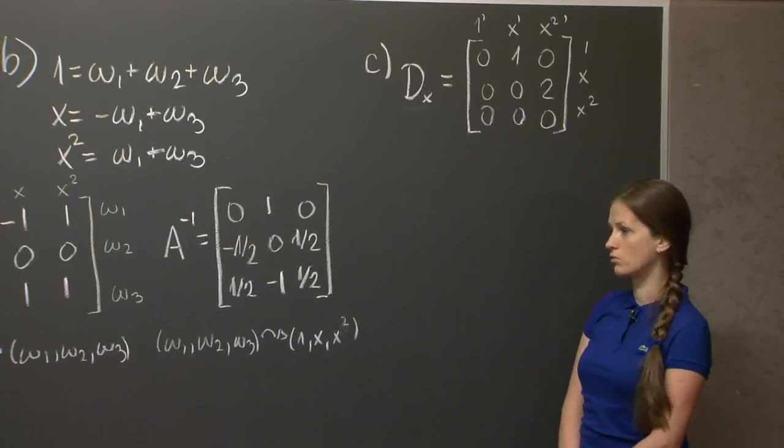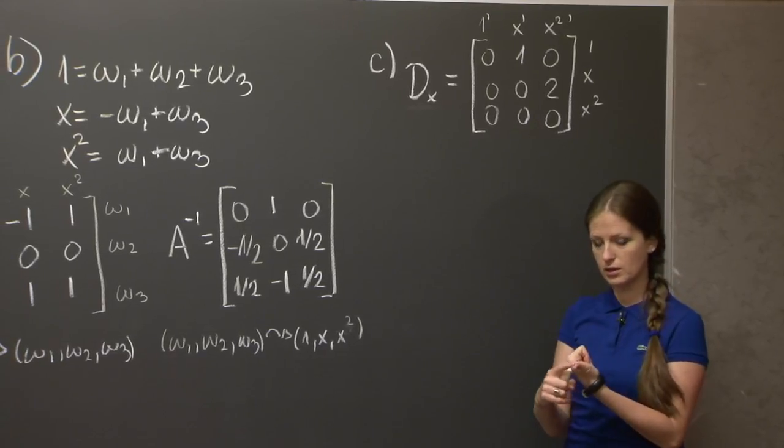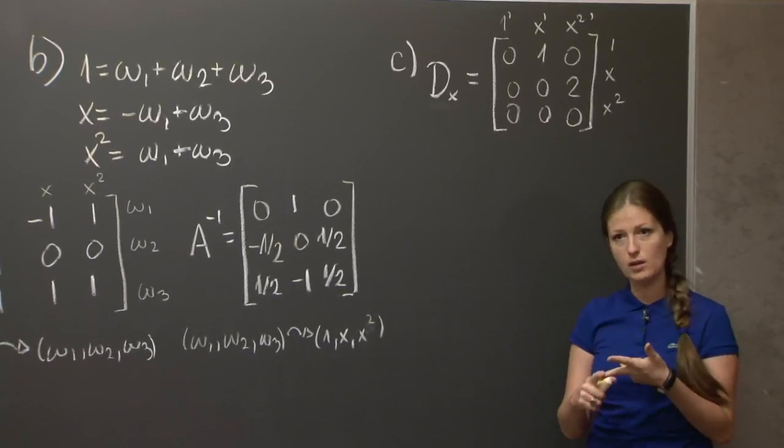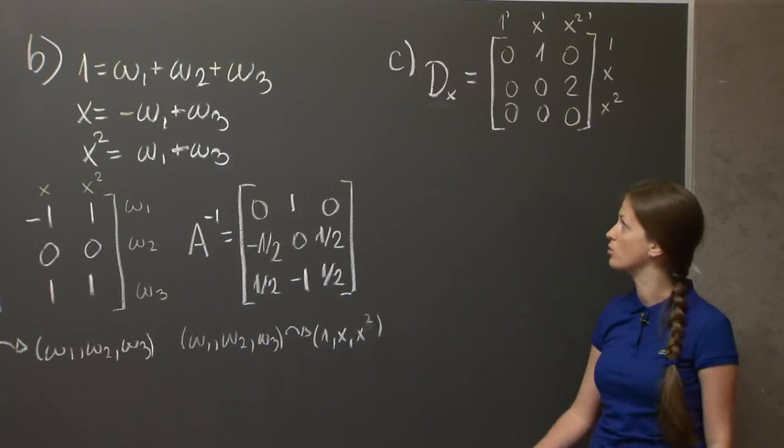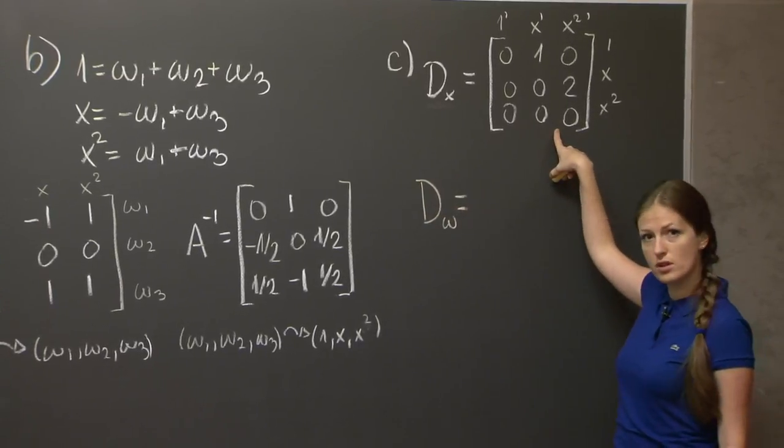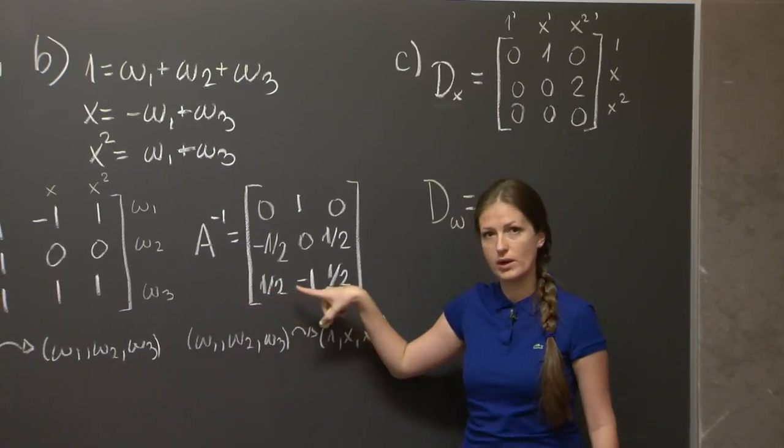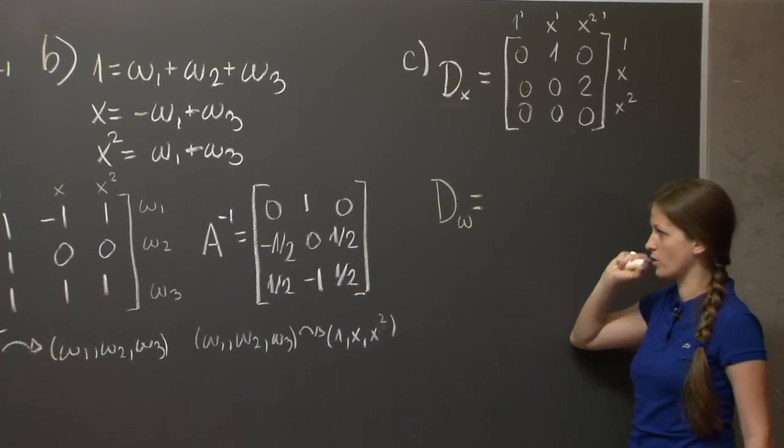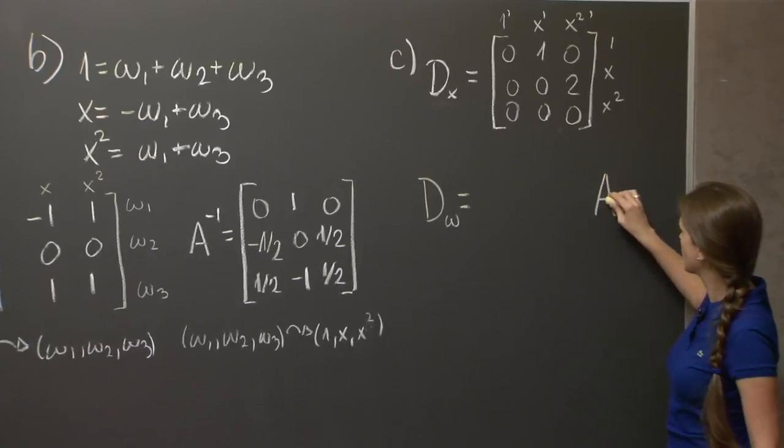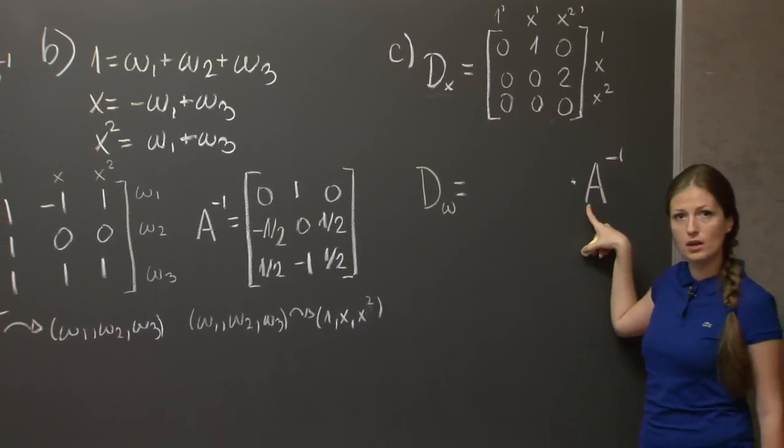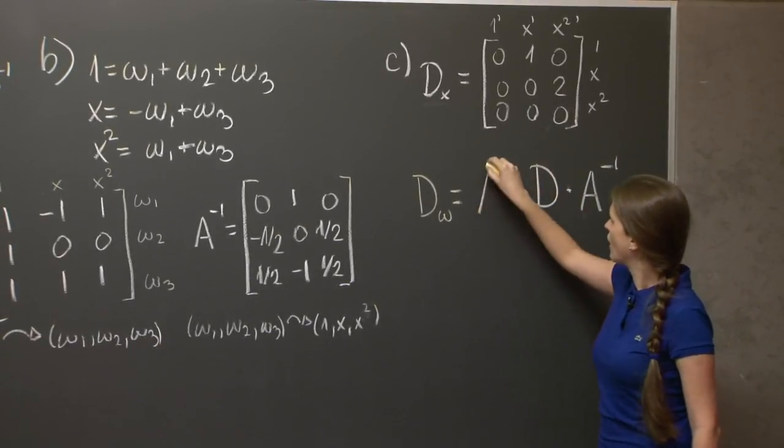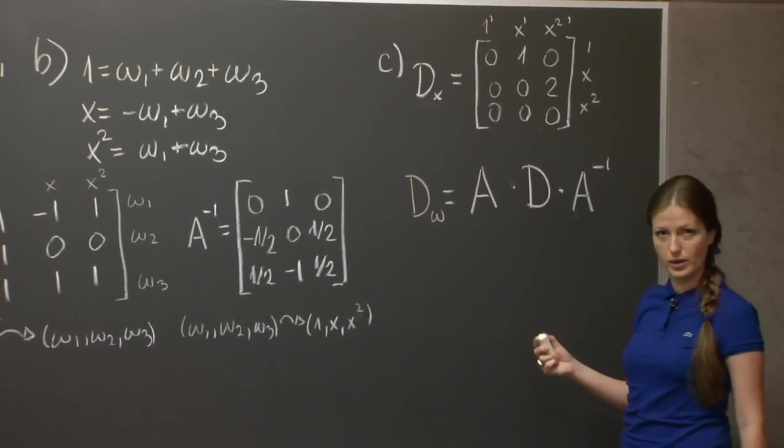That one was easy. For the other one, well, we could calculate w1, w2, w3 explicitly. Take their derivatives, go back to the table, and try to repeat the procedure that we did already. Expressing these derivatives in terms of w1, w2, w3. And that's a lot of work. But we pretty much already did most of this work. We know how to take derivatives in this basis, and we know how to go between these two bases.